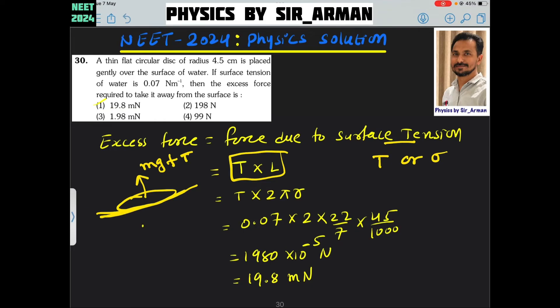So T times the length - for a circular disc, this length is 2πr. Surface tension is 0.07 which is given, the value of π I have taken is 22/7, and the radius is 4.5 centimeters which you can write as 45/1000. If you solve it, you will get 19.8 millinewtons, which is very near to option number 1.